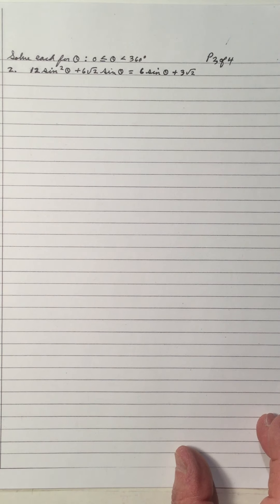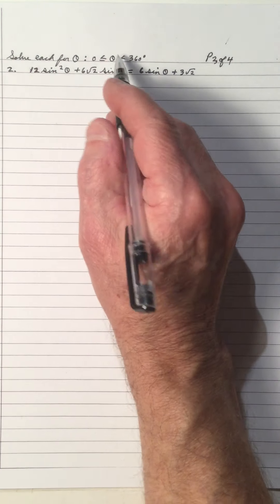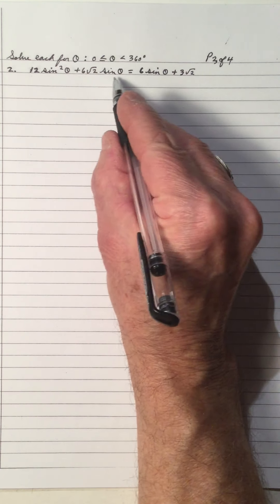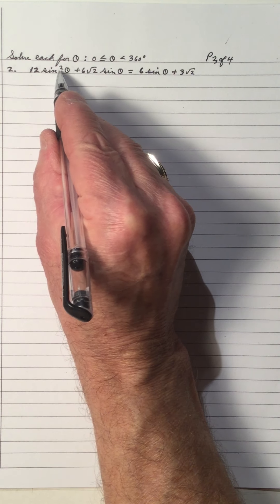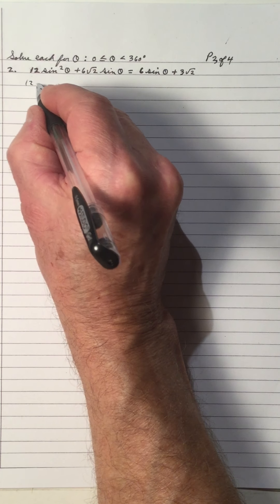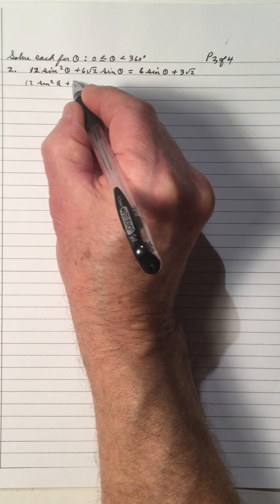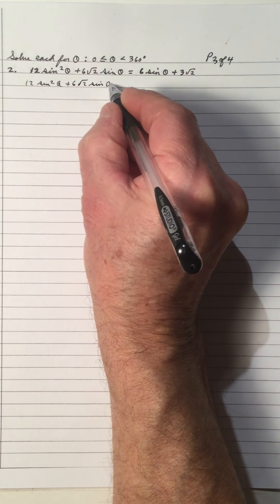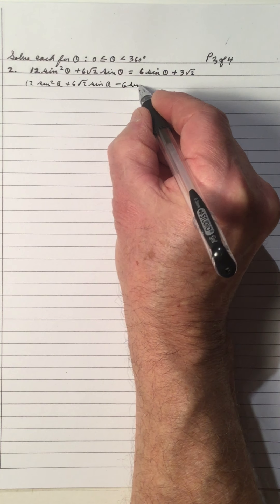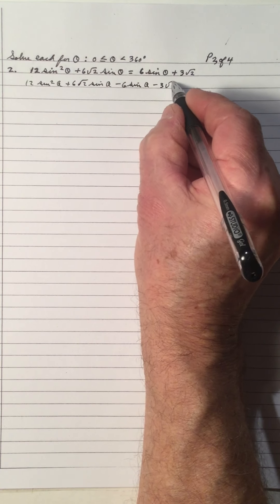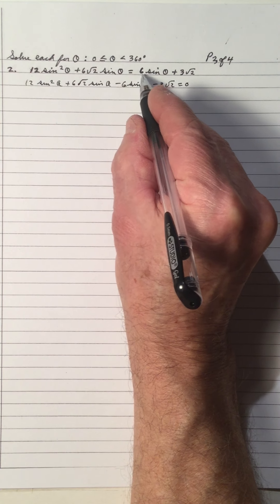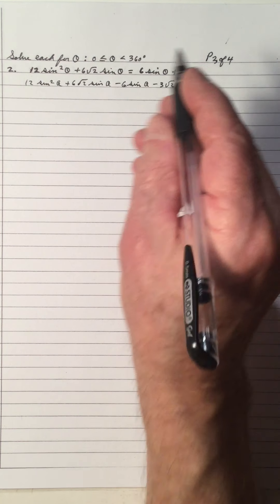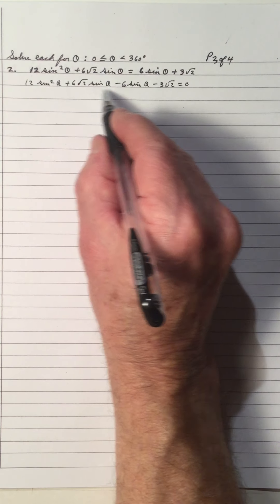Okay, let's continue. Solve each for theta: zero is less than or equal to theta, less than 360 — again in degrees. Notice it's not equal to zero, but it's a quadratic because it's degree two. So I'll move all terms to the left side. We get minus six sine theta minus three root two equals zero. The six sine moves to the left becoming negative, and three root two moves to the left becoming negative. Now we have four terms.